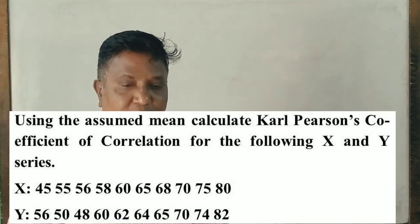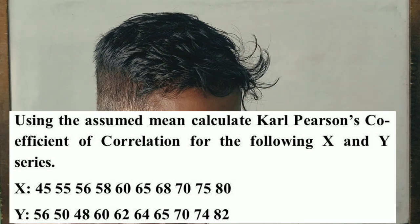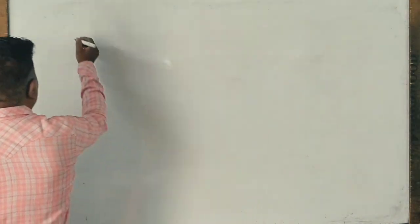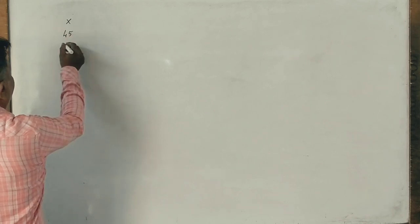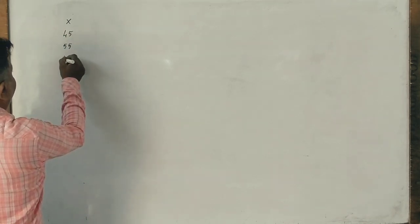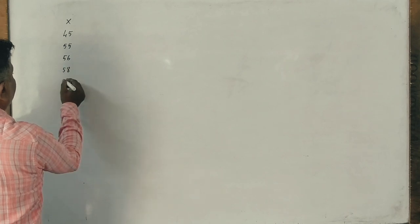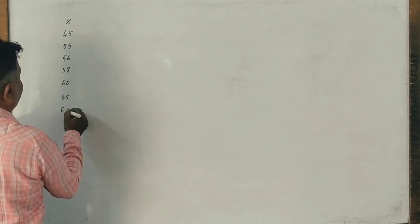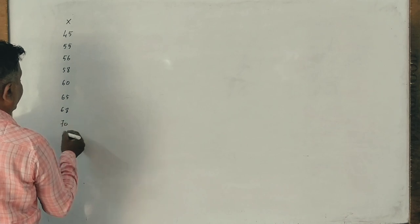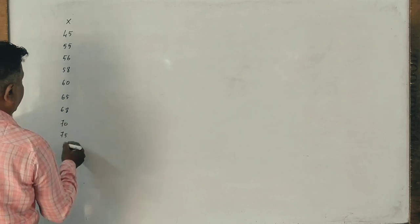First of all, X values: 45, 55, 56, 58, 60, 65, 68, 70, 75, 80.